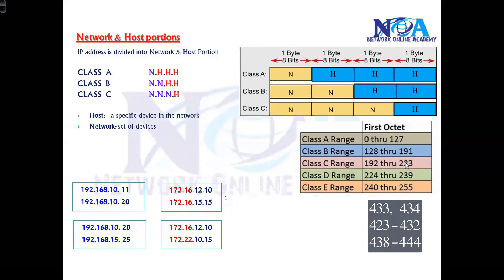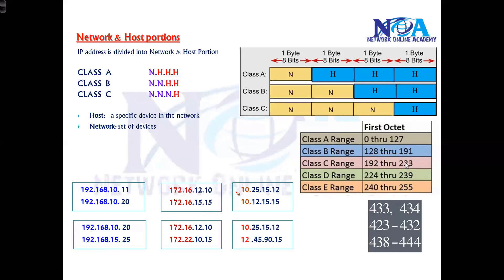For a Class A example, the address starting with 10 is Class A. In Class A there is only one network portion and three host portions. So if the first portion is the same, the devices are in the same network. If the first portion differs, the devices are in different networks or different subnets.